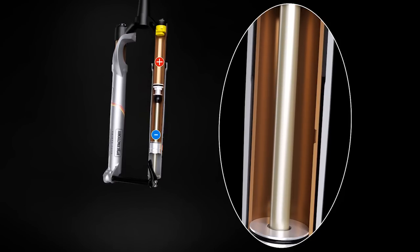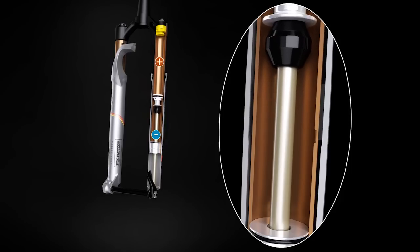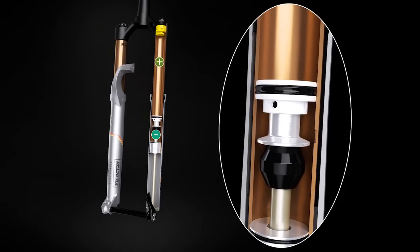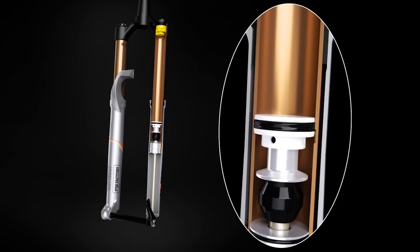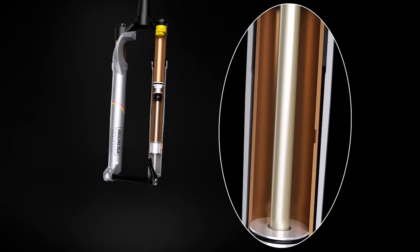When the fork extends, air pressure drops in the positive chamber and builds in the negative chamber to provide a soft topout. At full extension, the air piston seal aligns with the bypass port, joining the two air chambers again and ensuring they have equal air pressure. This cycle is repeated hundreds of times during a ride.